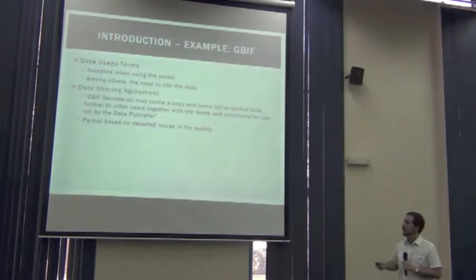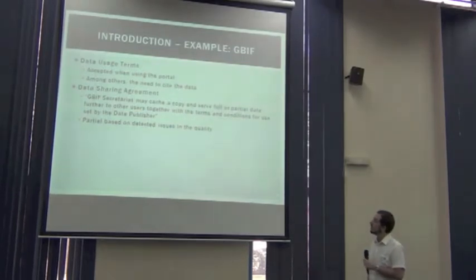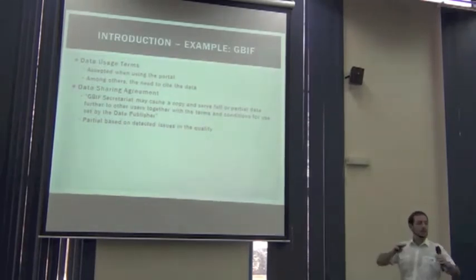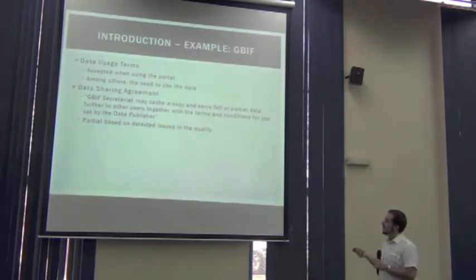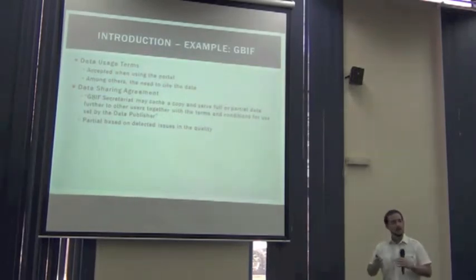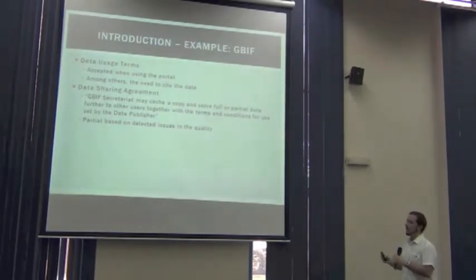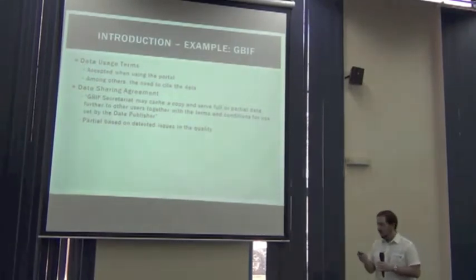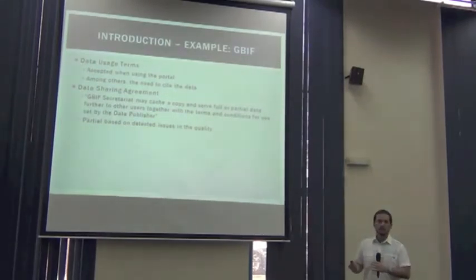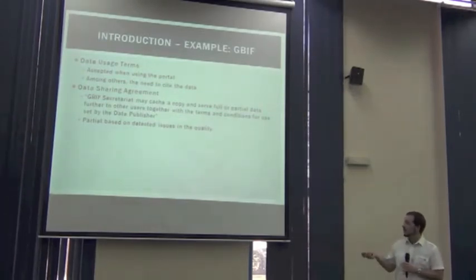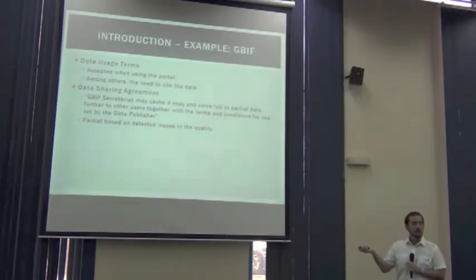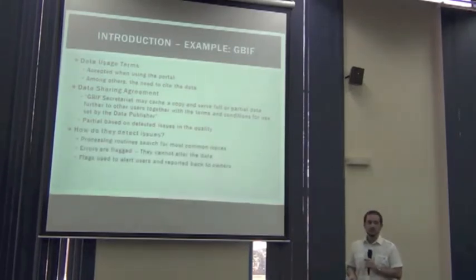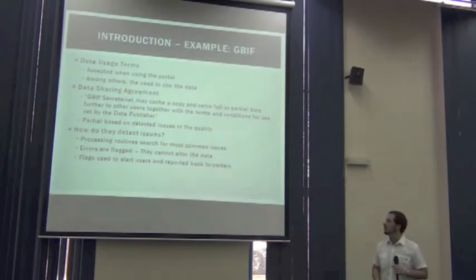The publishers have to sign a data sharing agreement which says the GBIF Secretariat — the central node of GBIF, the one that coordinates everything — may store a copy of the data and serve full or partial data. How do they know which data to serve and which data not to serve? This is based on the error flagging techniques that they apply — how do they detect the issues to know which data to show and which data not to show?